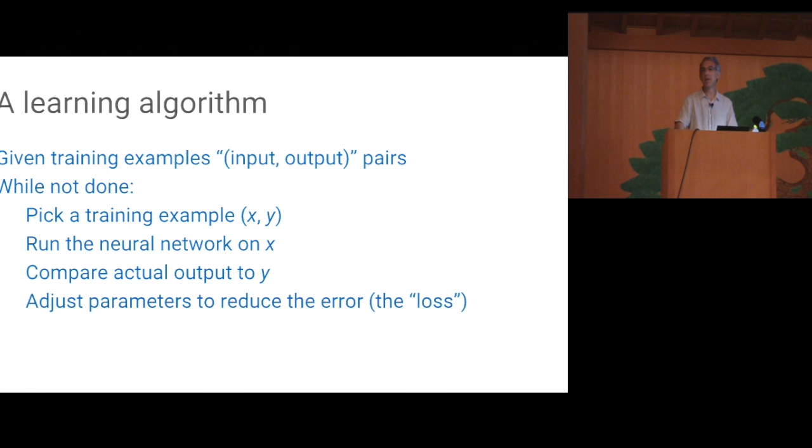How does one train such a system? How does one find good values for the parameters that make it be successful at classifying images, or whatever else it's intended to do? One approach, which is called supervised learning, is to gather somehow a lot of training examples, pairs of inputs and desired outputs, and to try to find values for the parameters that correspond to those known input-output pairs. And this is done simply by iterating over all of these examples. While not done, one picks a training example xy, runs the neural network forward on the input x, compares the actual output of the neural network to the desired output y, and if they're not equal, one adjusts the parameters of the neural network in order to reduce the error, to reduce the loss of the neural network.